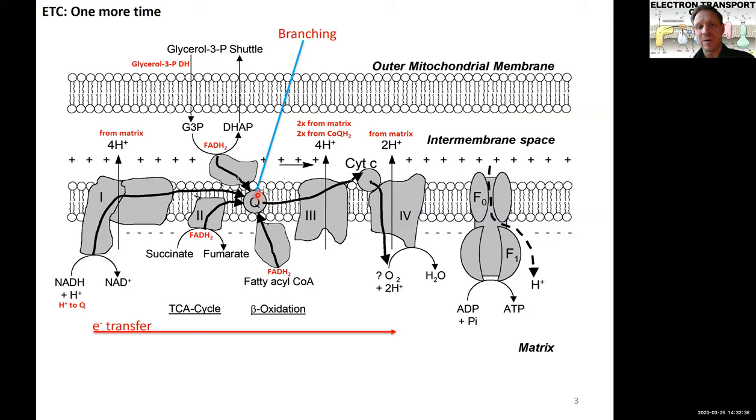If we're coming from, for example, FADH, complex 1 does not take FADH. All the other complexes do, especially they're coming in from complex 2 and the other dehydrogenases. So there, we're actually pumping only 6 protons because we're bypassing complex 1. So there's a different amount of protons that are being pumped, and that's actually really important for ATP production.